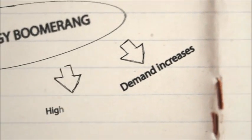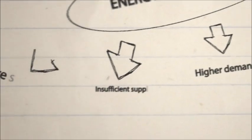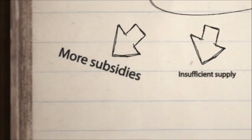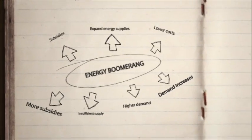So we come right back to where we started, with high demand and so-called insufficient supply. Well then we need more energy subsidies. And the cycle continues.